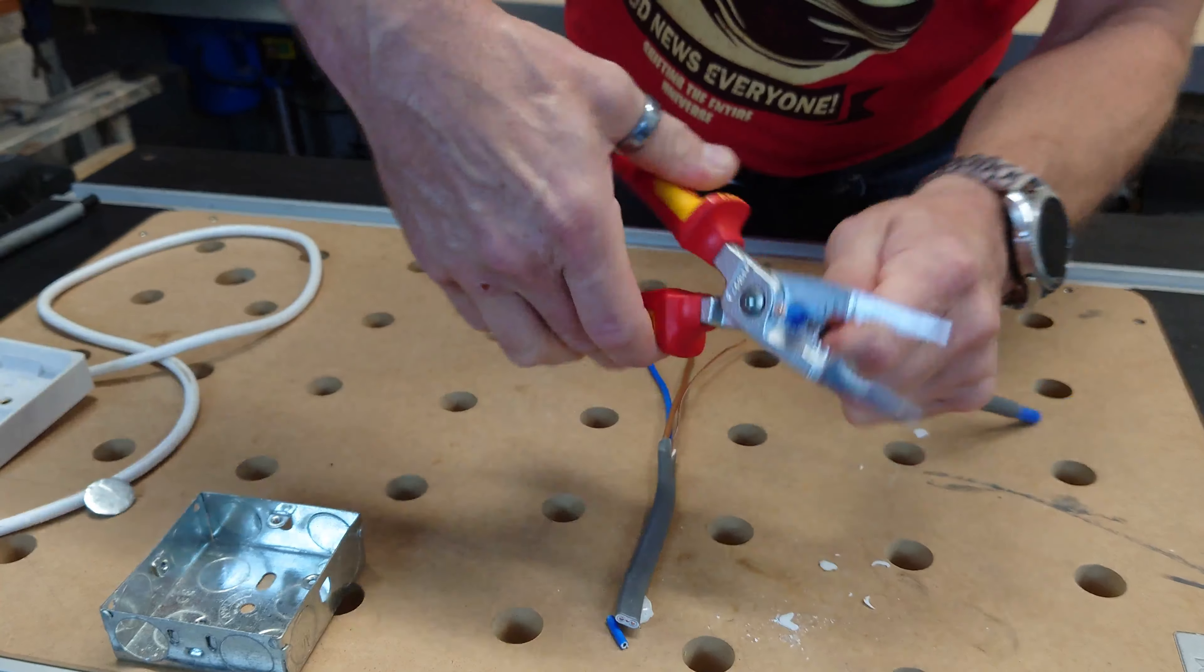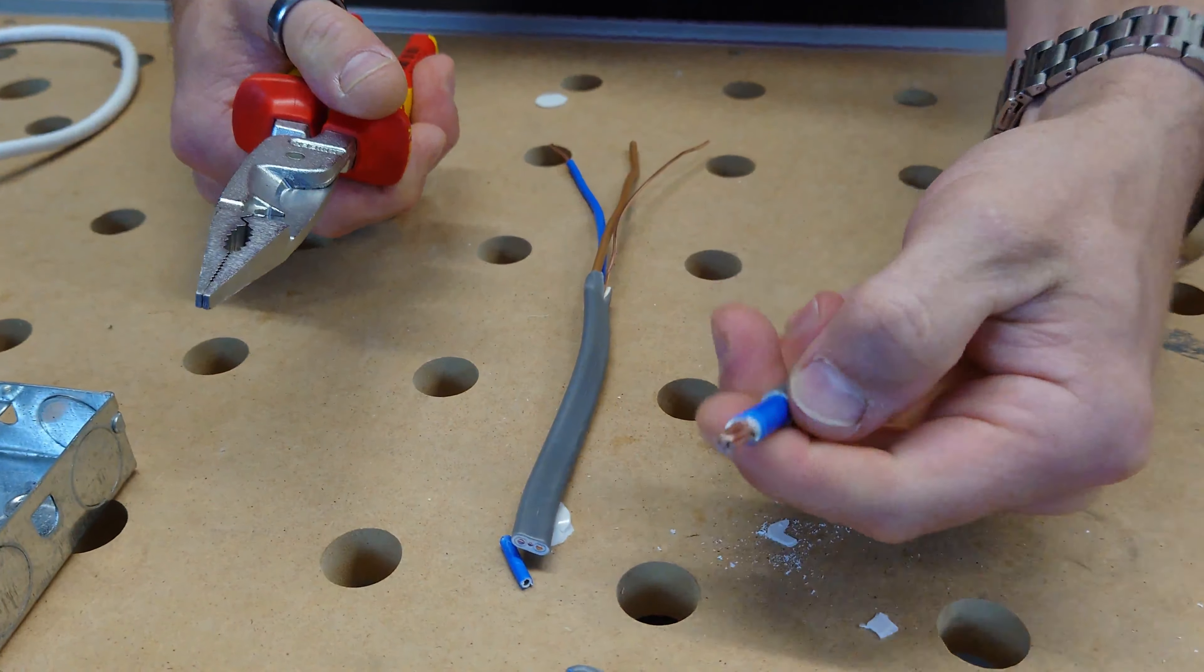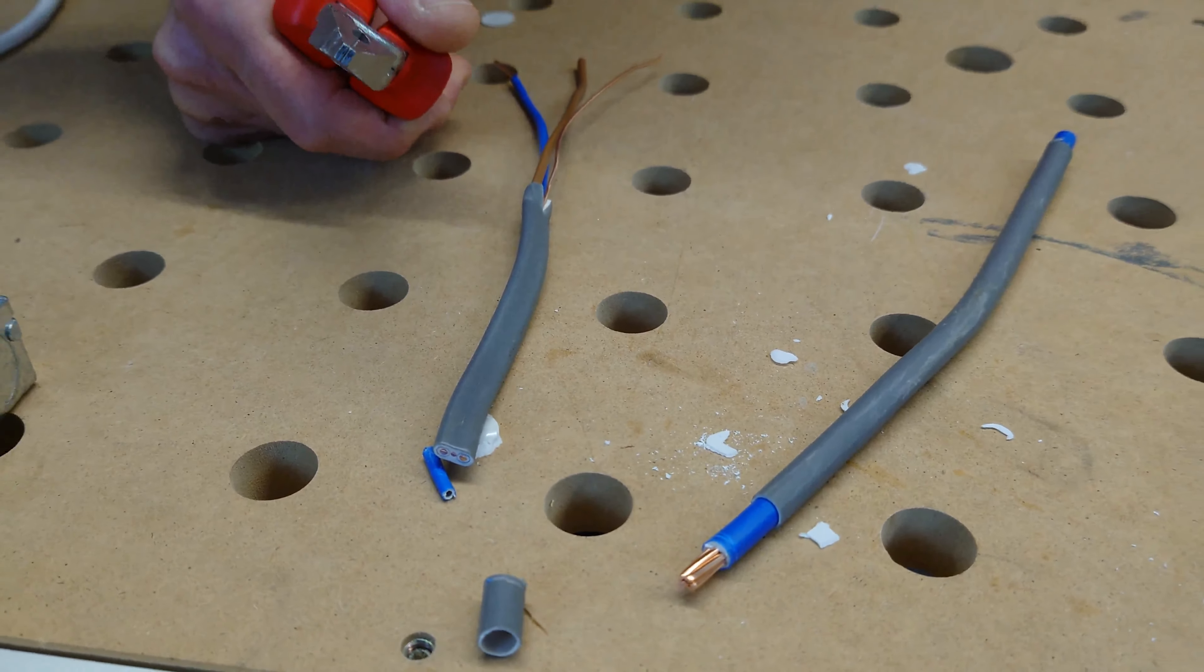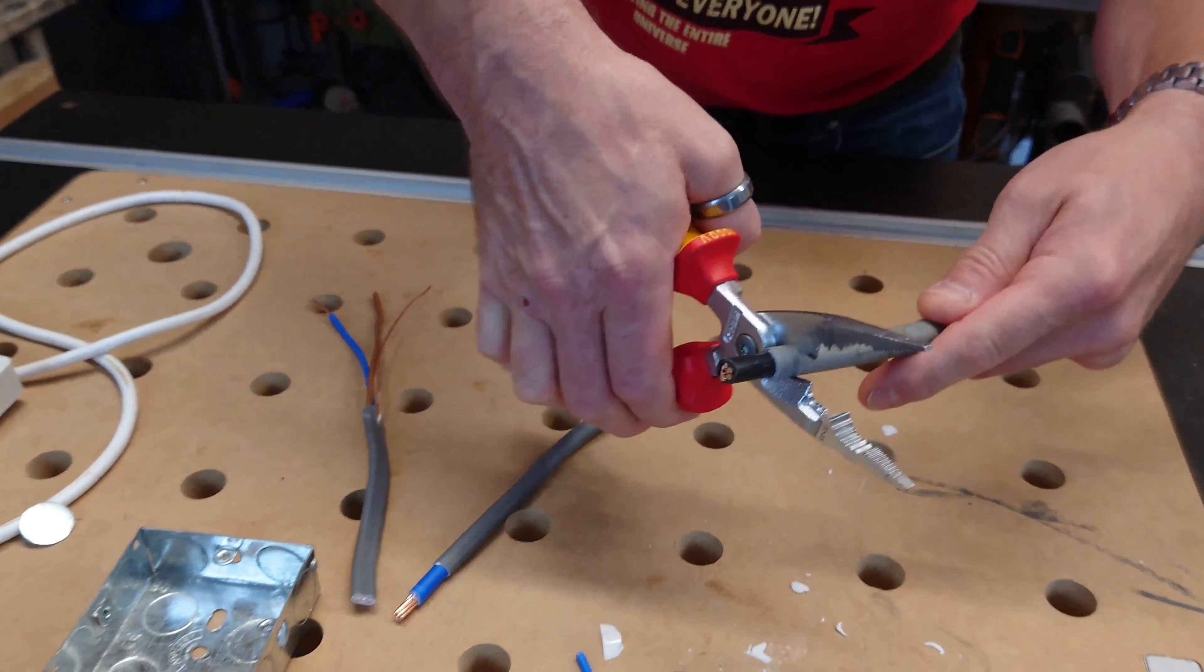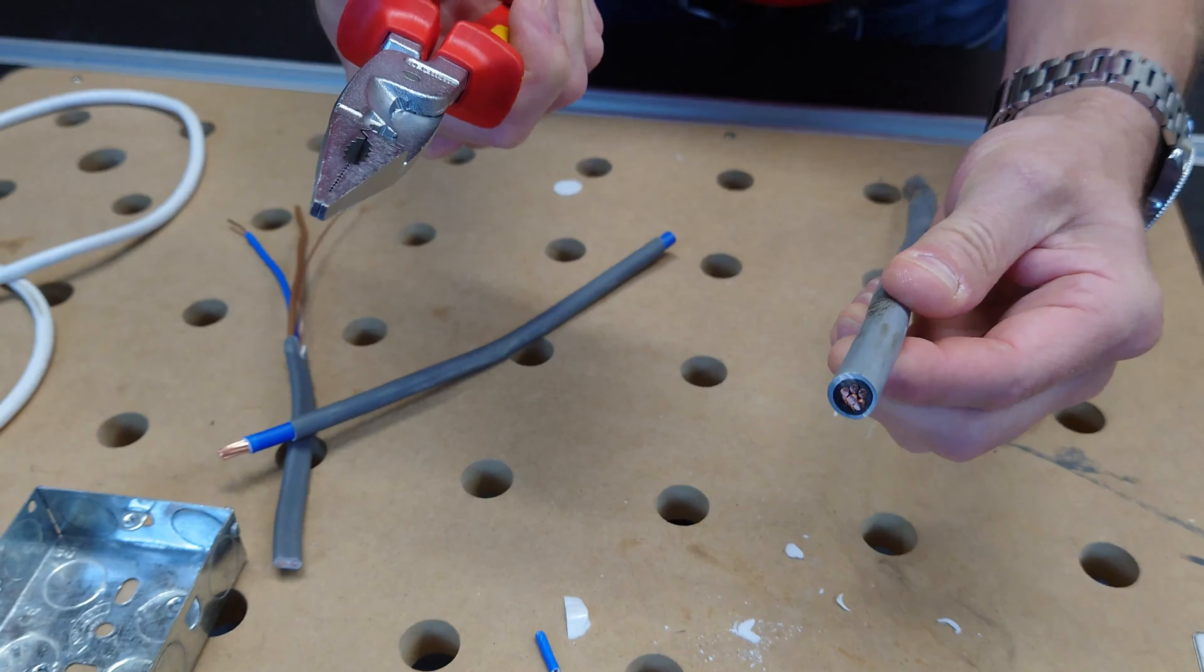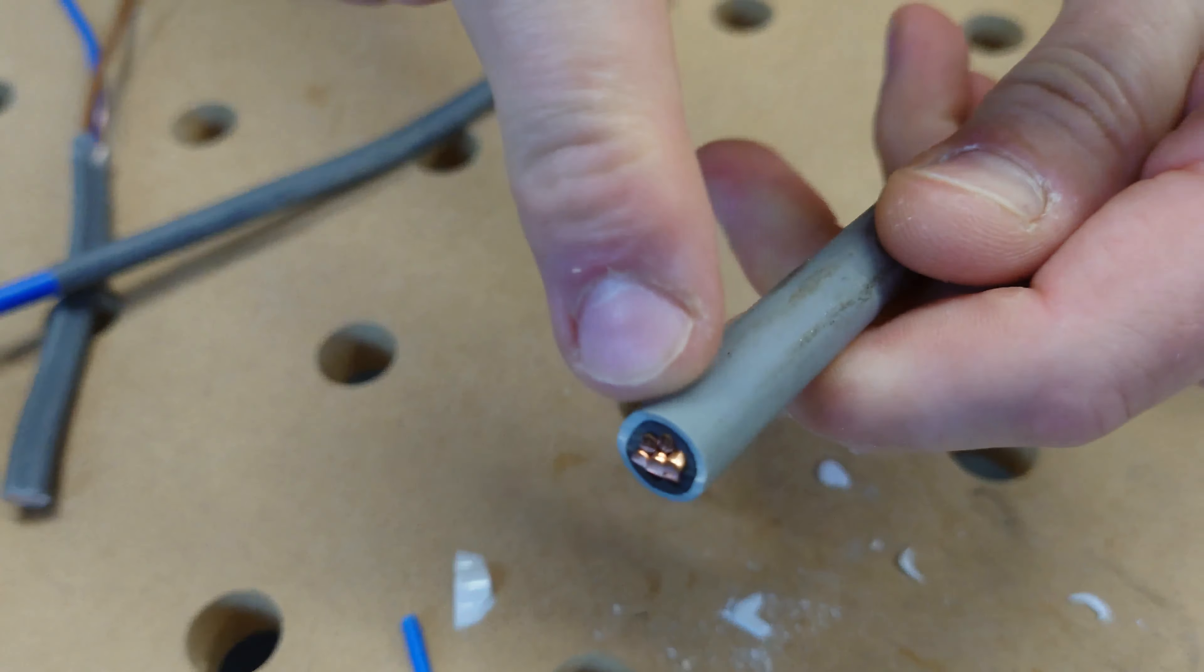And if you need to, do the inner sheath too. Really lovely pair. But the one thing I do like about these as well is that I know they're not rated for it, but taking a piece of 25 millimeter cable, and with a little bit of extra pressure, it will just snip straight through it. And again, there's no damage done to the outer core there.